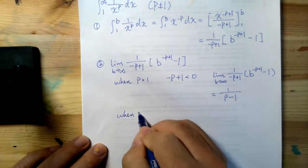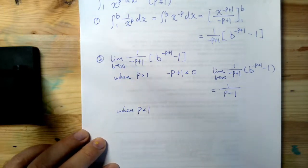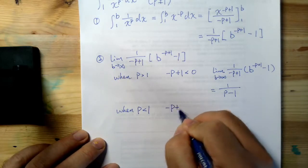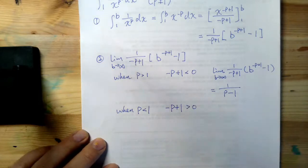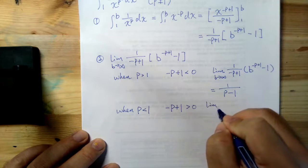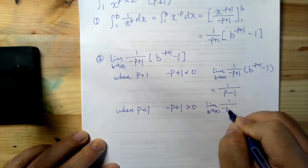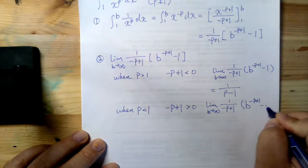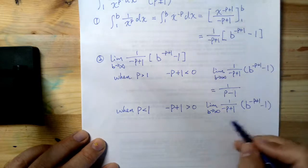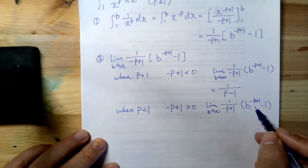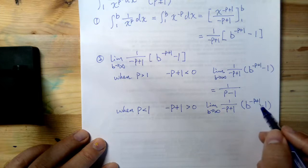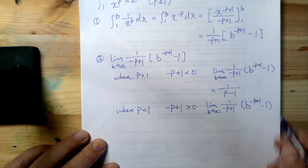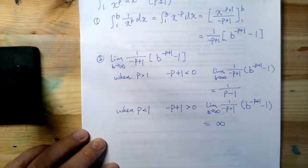When p is less than one, negative p plus one is actually greater than zero. So under this situation, as b goes to infinity, b to the power of negative p plus one, since that power is positive and b is going to positive infinity, the overall result here is going to be positive infinity. So this limit we can claim as infinite — the integral diverges.